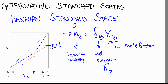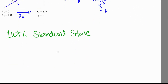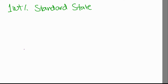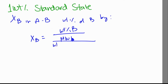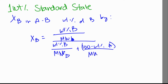We can also define the one weight percent standard state. The mole fraction of B in solution A-B is related to the weight percentage of B by: X_B = (wt% B / MW_B) / [(wt% B / MW_B) + (100 − wt% B) / MW_A]. Essentially, we converted to number of moles to get X_B.